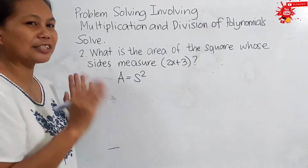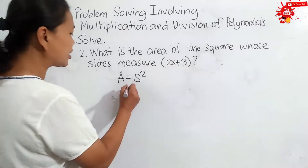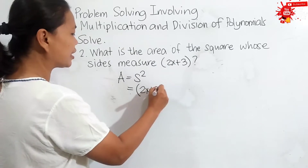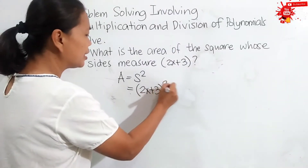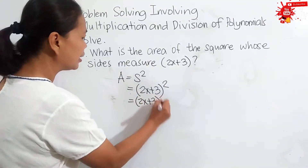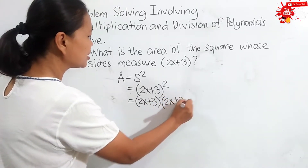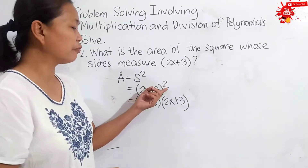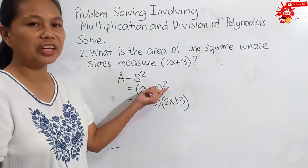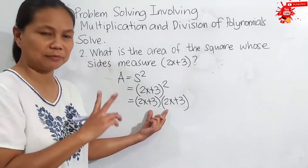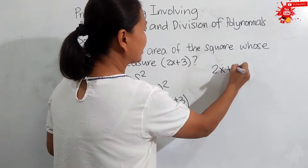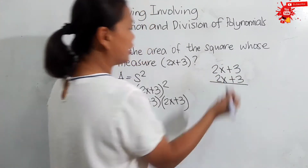S squared means S times S, or side times side. We substitute the given value for the side which is 2x plus 3. So, we have the quantity of 2x plus 3 squared, which means 2x plus 3 times 2x plus 3 — the exponent means we multiply the base by itself 2 times. Now, let us multiply using the vertical method: 2x plus 3 times 2x plus 3.